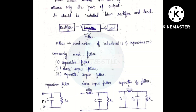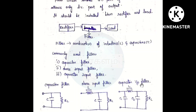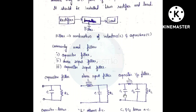In the Capacitor Filter, the capacitor is connected in parallel. For the Choke Input Filter, we represent the coil — the inductor — in series with the rectifier output, and C is connected in parallel with the load. For the Capacitor Input Filter, C1 is in parallel at the input, followed by the inductor, and C2 is in parallel at the output, before the load resistor R.